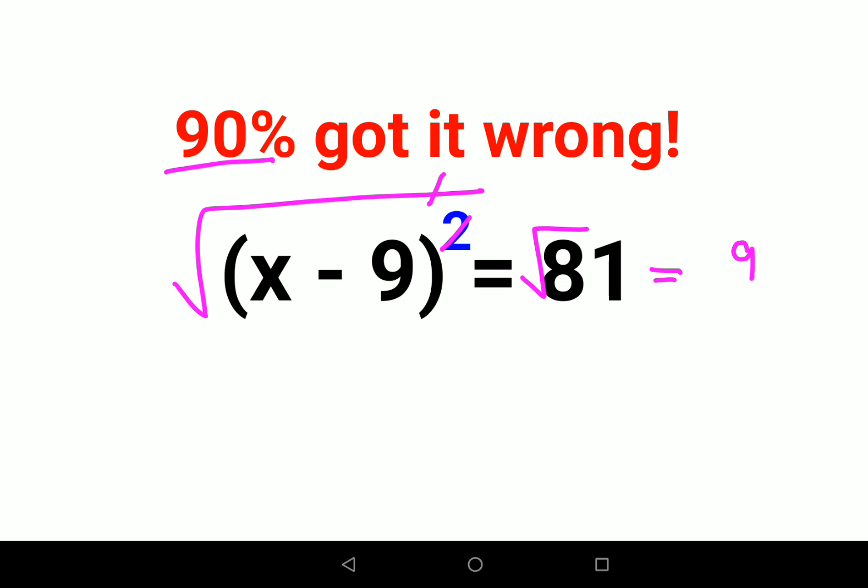Now this is where a lot of people got stuck and they forgot that when you take a square root, the answer normally comes out to be positive and/or negative of that value.